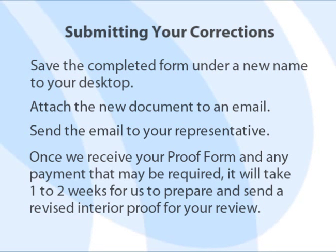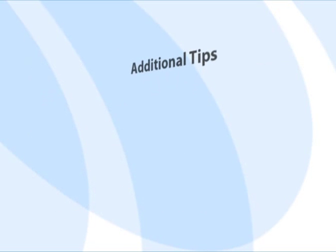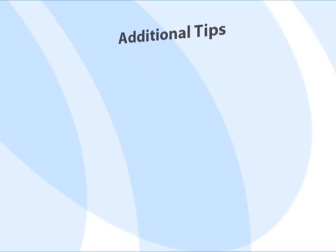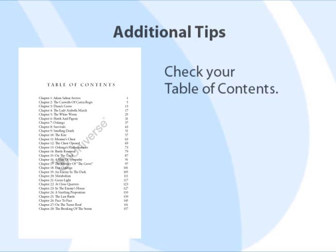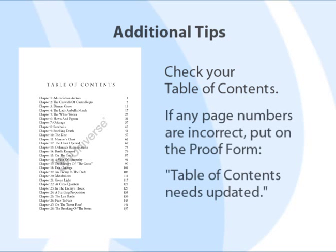When reviewing your interior for errors, here are a few additional things to look for. If your book has a table of contents, make sure the page numbers are accurate. If they are not, you do not need to list every instance where the page numbers are wrong. Just put 'table of contents needs updated' on your proof form and mark it as a publisher error. We'll correct all the page numbers for you.